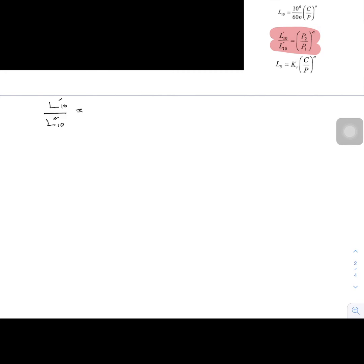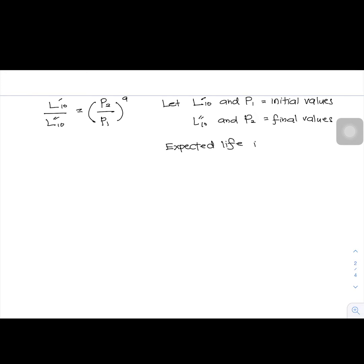The last question is to determine the load of a ball bearing if the expected life is increased by 25%. We just take formula from the book. We assume that L10 and P1 are the initial values, and L10 prime and P2 are the new or final values.